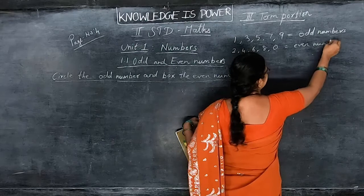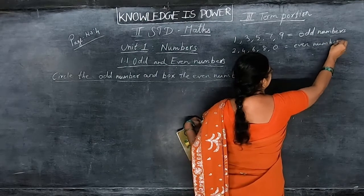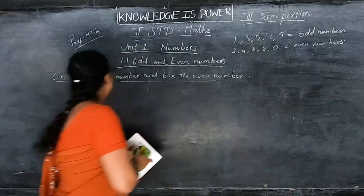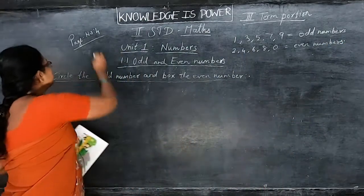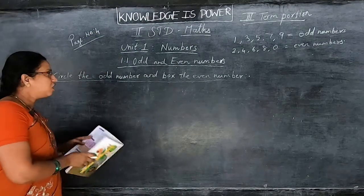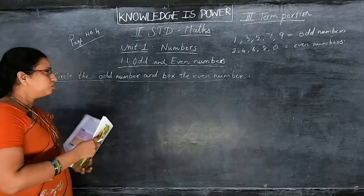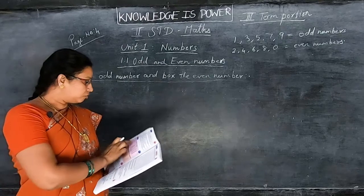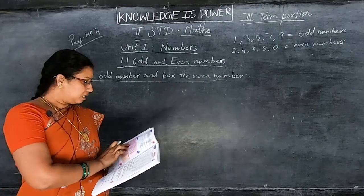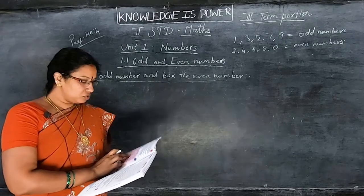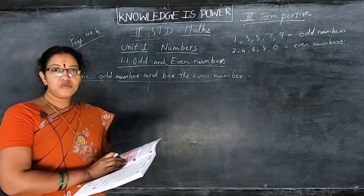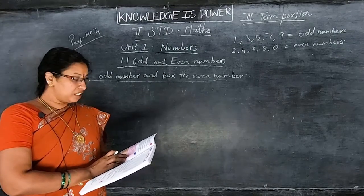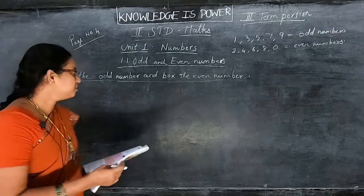In the last class I explained to you, children. I gave you a 2-mark exercise on page number 4: circle the odd numbers and box the even numbers. I did questions 1 to 5 on the board, and 6 to 10 I gave you as homework. Check whether you have done the homework.